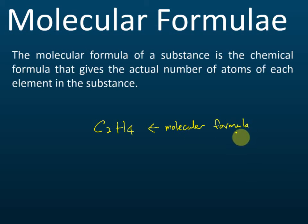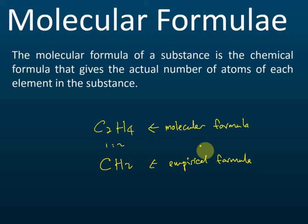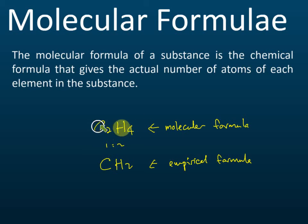The empirical formula CH2 shows the simplest ratio of 1:2. So the difference is: molecular formula shows the actual numbers of each element, while empirical formula shows only the simplest ratios of each element in the molecule.